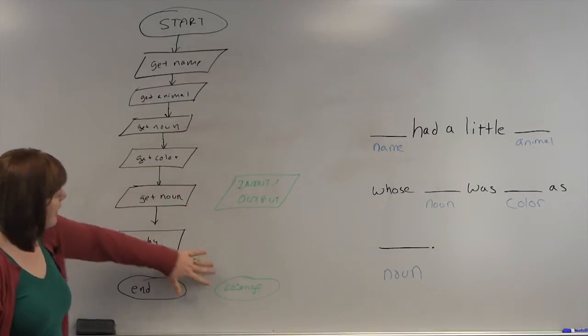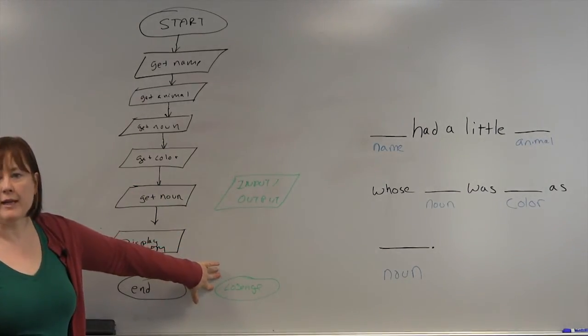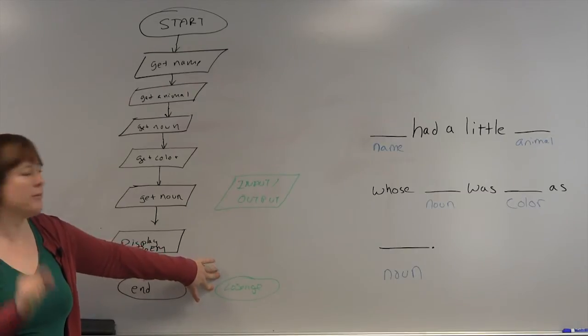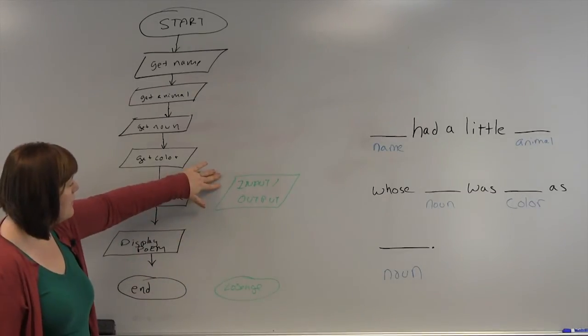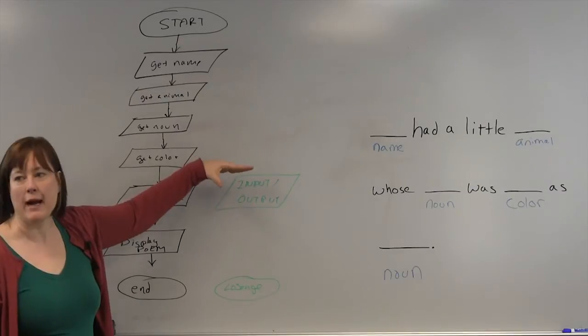So these are two shapes. The lozenge is used to indicate the start and end of a program or a piece of a program, and this represents input and output.